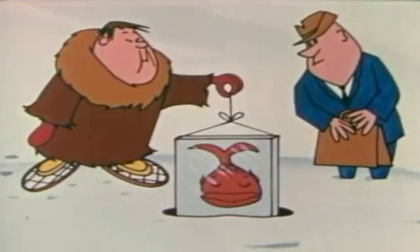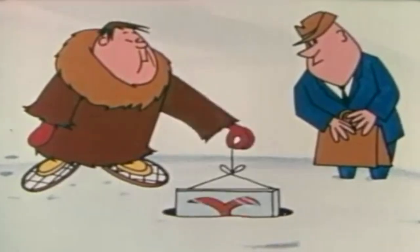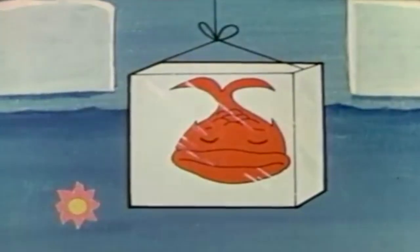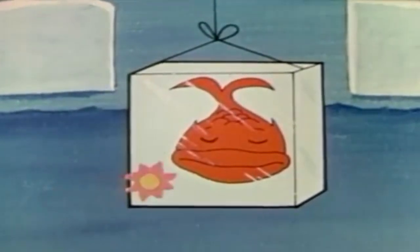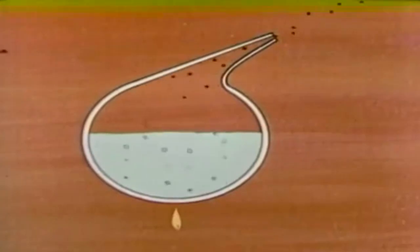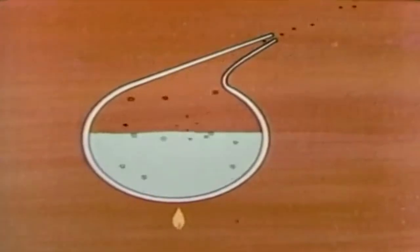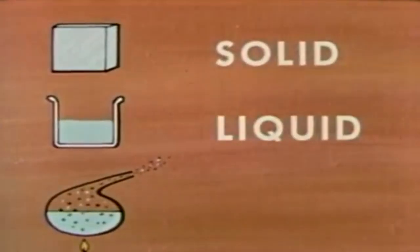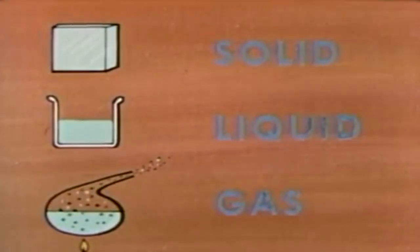If you put an ice cube into water, the water is cold but the ice is even colder. By comparison, the water is warm, so heat will flow from the water to the ice. This changes the ice, which is a solid, to water, which is a liquid. If you heat the water, it turns into a vapor — a gas. These three — solid, liquid, and gas — are called the three states of matter. All matter around us exists in one of these three states.